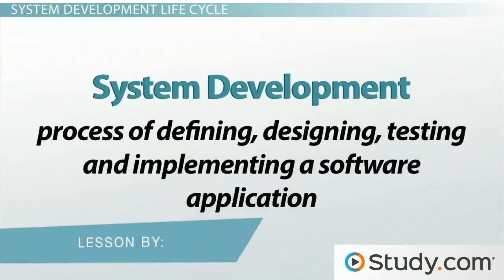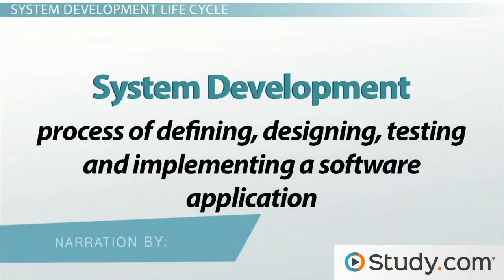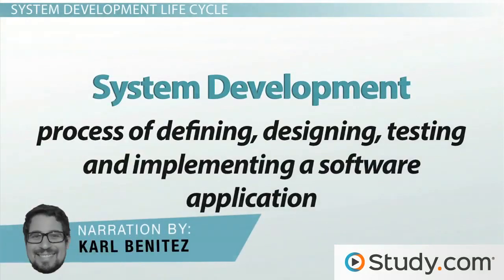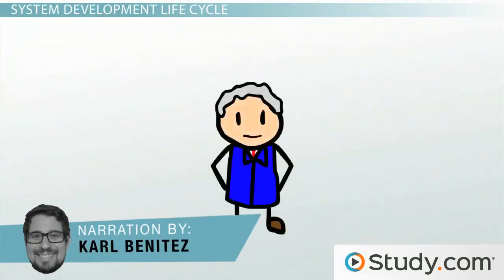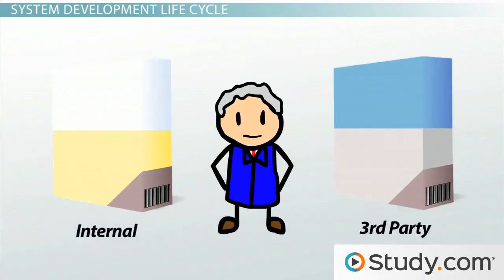System development is the process of defining, designing, testing and implementing a software application. This includes the internal development of customized systems as well as the acquisition of software developed by third parties.